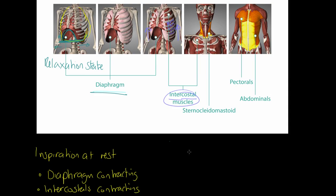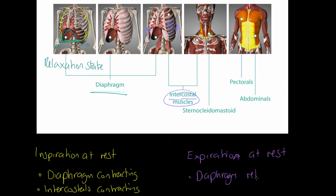Here's where it gets interesting. When talking about breathing out at rest — expiration at rest — there are no muscular contractions. The diaphragm simply relaxes and domes back to its original position. The space inside the cavity becomes smaller, pressure goes up, and air is pushed out. The intercostals also relax. So expiration is a passive process — it's actually relaxation of muscles. When resting, that's all that's happening.